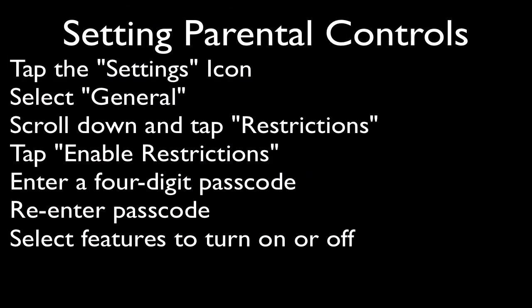To review, in order to set parental controls on your iPod Touch, you must first tap the Settings icon. Then, select General. Scroll down and tap Restrictions. Tap Enable Restrictions. Enter a four-digit passcode, and re-enter your passcode the first time you do it. And select which features you wish to turn on or off.